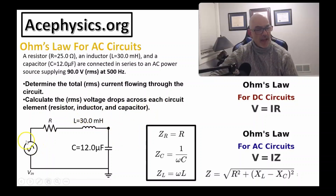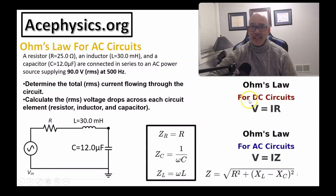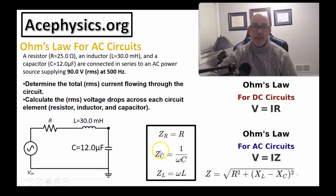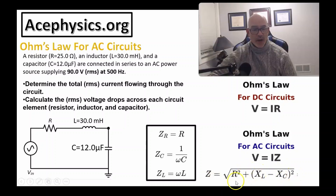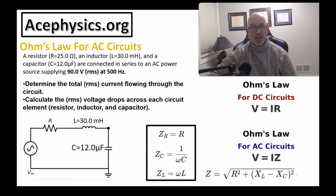This is a series RLC circuit with a power supply at 500 hertz and angular frequency 2·pi times that. For DC circuits, Ohm's law is V = I·R. Ohm's law also applies for AC circuits: V = I·Z, where Z is the impedance. The impedance of a resistor is R, a capacitor is 1/(omega·C), and an inductor is omega·L, where omega is the angular frequency, C is the capacitance, and L is the inductance. The total impedance is the square root of R² plus (X_L minus X_C)², where X_L is the inductive reactance and X_C is the capacitive reactance. Note: Ohm's law does not apply to DC circuits with charging or discharging capacitors.